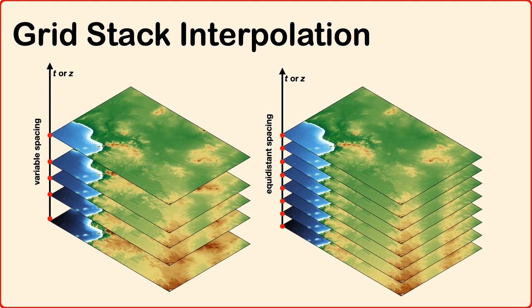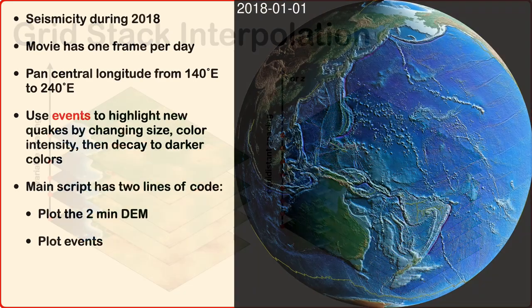For grid stack interpolation, GRD Interpolate simply gets intermediate grids in the time sequence so that you have constant equidistant spacing between grids.